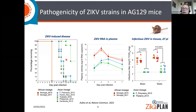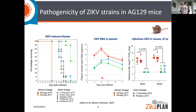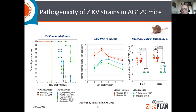We also looked at viral load in blood and tissues, using a smaller selection of strains: the two from Africa, the attenuated Thailand strain, and the French Polynesian strain as representative of other Asian strains. Viral load in plasma and tissues was considerably higher for mice infected with the African strains, as shown by the red and orange lines and dots. This clearly indicates that the African strains are more pathogenic and result in significantly higher morbidity and mortality in these AG129 mice.